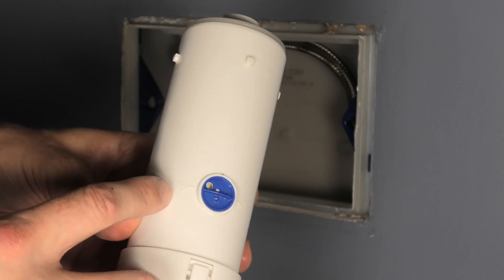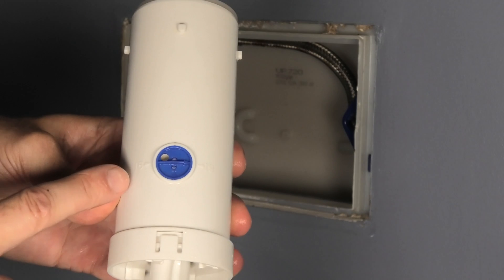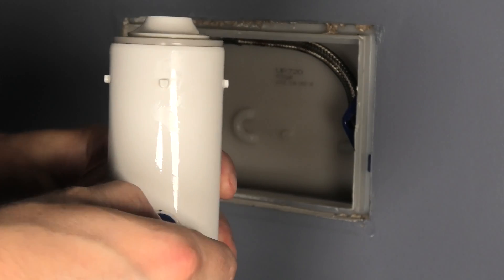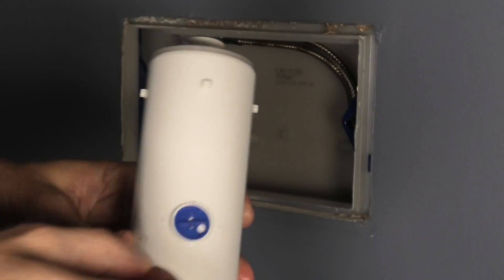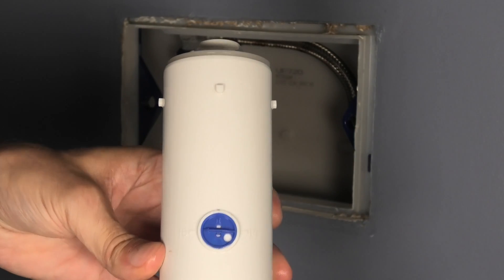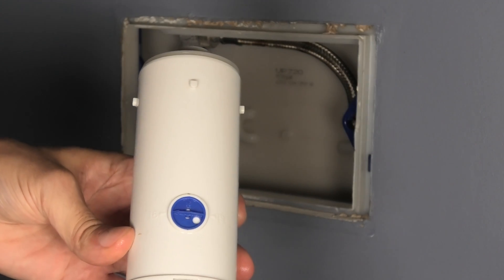So I do not know what the 16 and 19 necessarily stand for. Maybe it is how many inches the water level rises. But one of them, the 16 is for the 1.28 gallon flush and the 19 is for the 1.6 gallon flush. So this is how easy you can adjust the flush volume. And you only have these two options here.